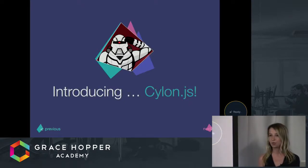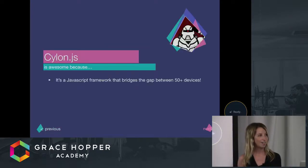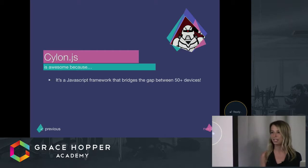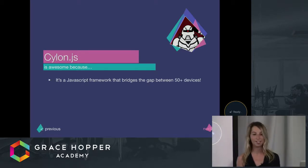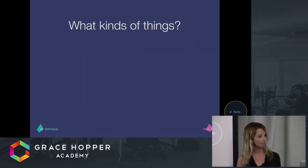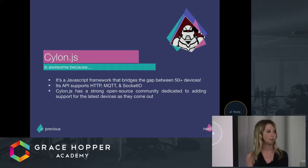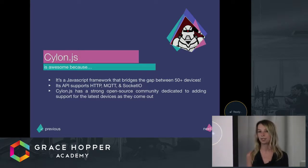That brings us to a framework that makes it really easy to get all these things done, which is called Cylon.js. Cylon.js is really awesome — it's a JavaScript framework and it bridges the gap between over 50 devices. Its API supports HTTP and socket IO, so you can be listening for multiple things at the same time and constantly have that connection open between multiple devices. And it has a really strong open-source community, so you're never waiting for support when the newest devices come out — there are developers constantly devoted to putting out platforms and Node modules to make it easy to integrate new devices into your existing framework.